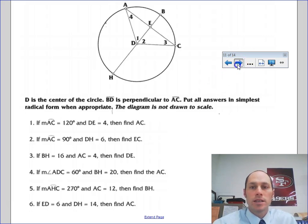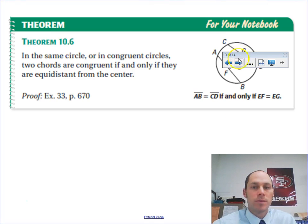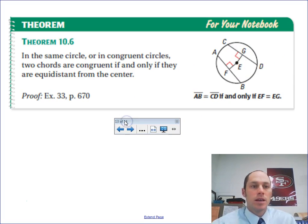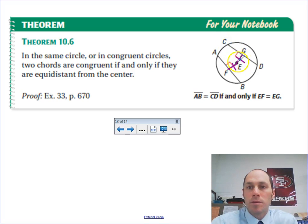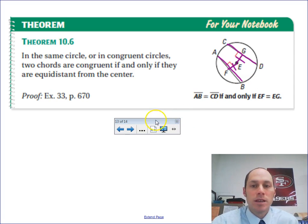Let's look at one more theorem. In the same circle or in congruent circles, two chords are congruent if and only if they are equidistant from the center. So if G and F are equidistant — same distance at a right angle, because that's the shortest distance — then CD and AB will also be congruent. That's that biconditional statement, and we'll apply it in a few examples.